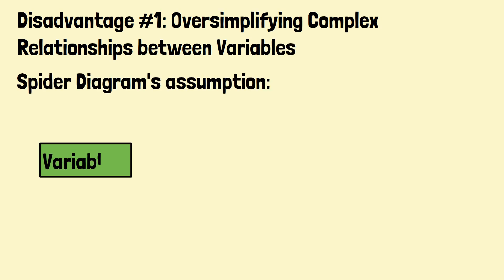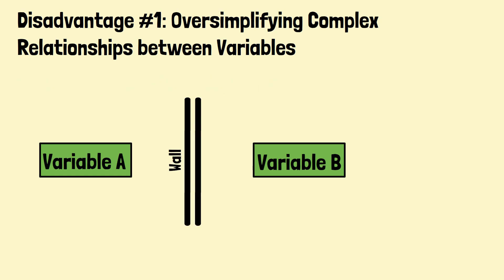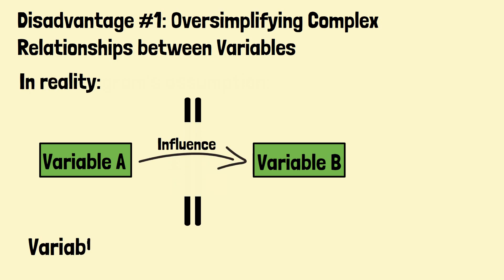The SPIDER diagram assumes that each factor is independent, and changes in one factor will have a direct impact on the outcome. In reality, the relationships between variables may be much more complex and non-linear.